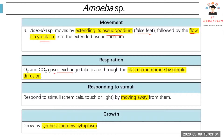Oxygen and carbon dioxide go in and out through the plasma membrane by simple diffusion. Amoeba is able to respond to stimuli like chemicals, touch, or light by moving away from them. Amoeba is also able to grow by synthesizing new cytoplasm. So basically, amoeba is a living thing — it can grow, breathe, and move.